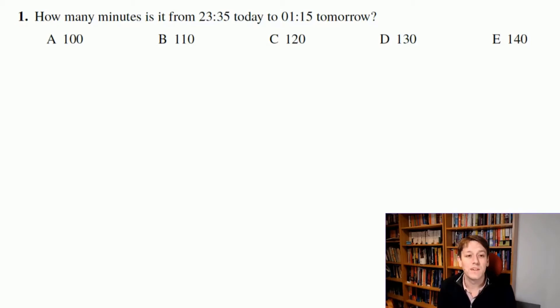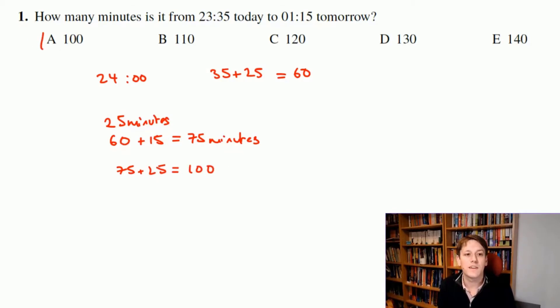Midnight would be 24:00. At 23:35 there's another 25 minutes until midnight because 35 plus 25 equals 60. We've got 25 minutes until midnight and then at midnight it's another one hour and 15 minutes until 1:15. One hour is 60 plus another 15 is 75 minutes, and that means the total is 75 plus 25 which is 100 and the answer is A.